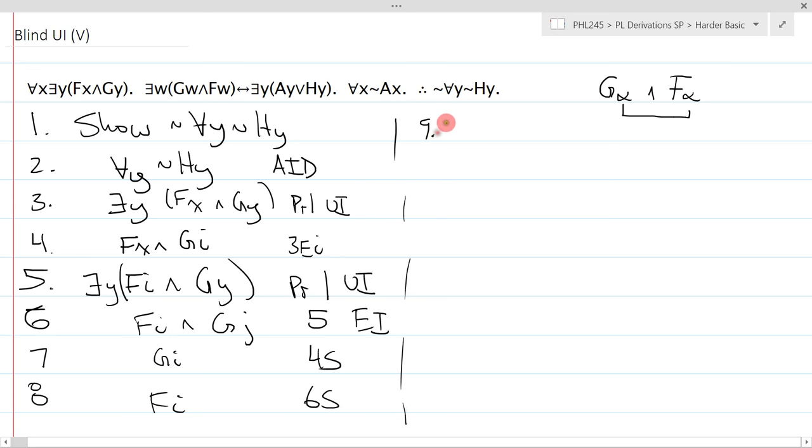Of course, this lets me go straight to GI and FI, and that's line seven, eight, ADJ. And on line 10, I can existentially generalize this to whatever variable I want. I pick W, and that's nine EG.